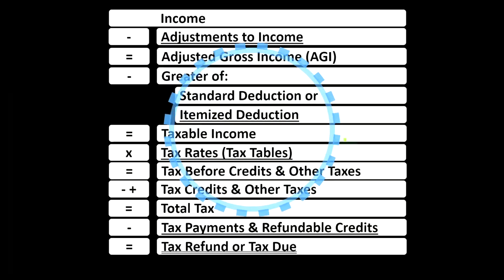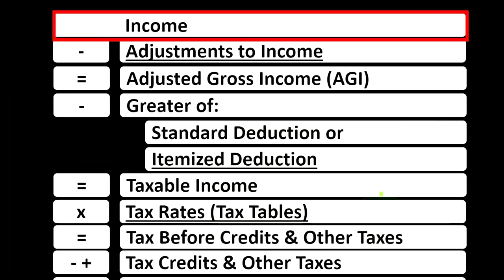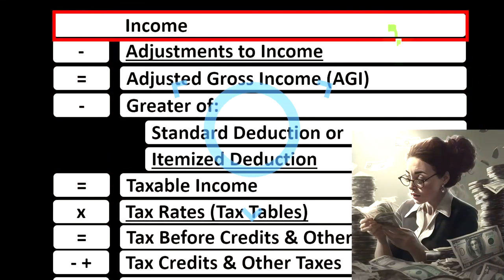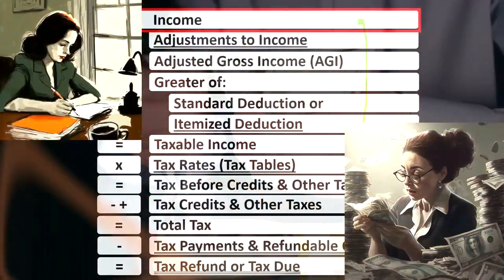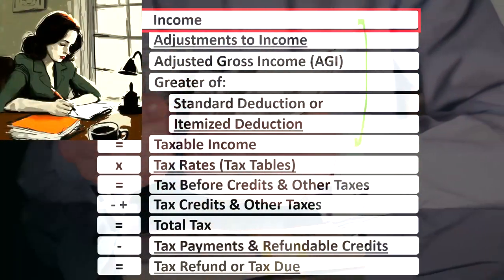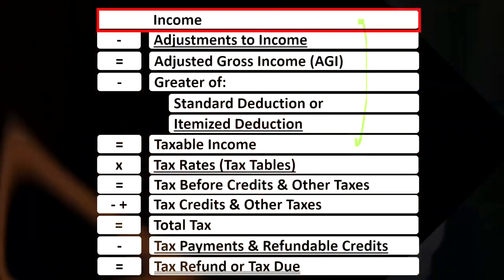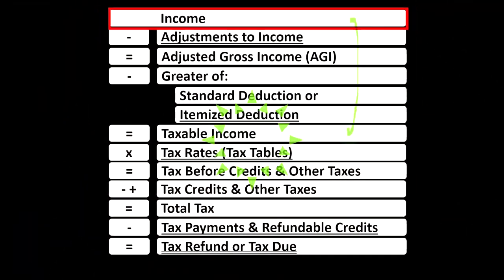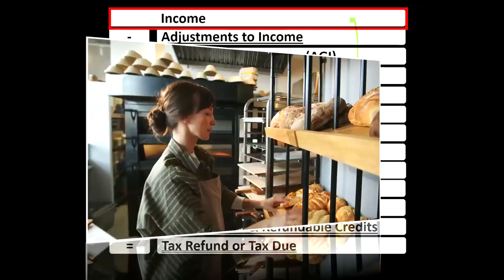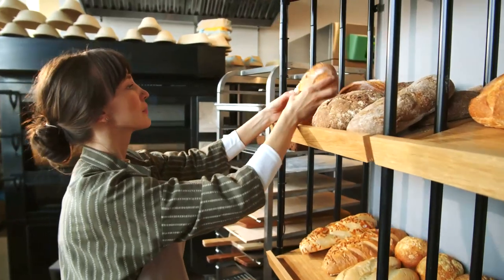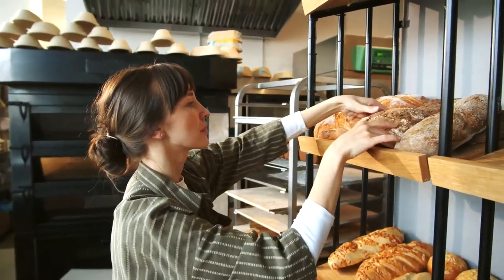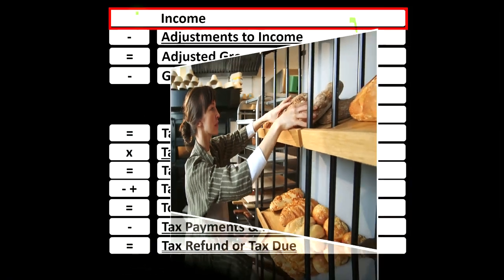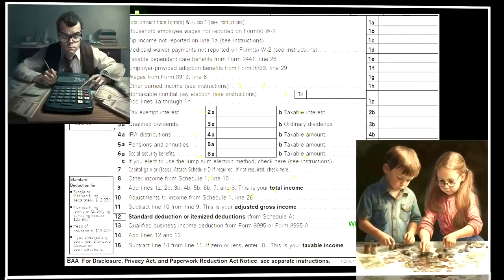Looking at the income tax formula, we're focused on line one income. The first half of the income tax formula is, in essence, an income statement — just an outline of other forms and schedules flowing into these line items, one of those being the Schedule C, which has business income minus business expenses. The net business income flows from the Schedule C into line one income of our income tax formula.